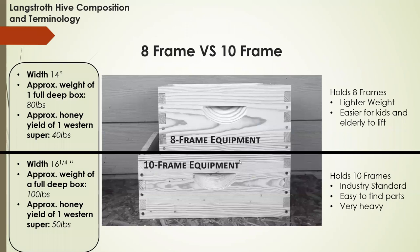Eight-frame versus ten-frame: it sounds complicated, but it's really simple. The only difference is you can fit eight frames into an eight-frame hive and ten frames into a ten-frame hive — the difference between the two hives is about two inches in width. They're the same height and depth. The weight is the biggest difference though: a full deep brood box in an eight-frame hive is typically around 80 pounds versus 100 pounds in a ten-frame. A lot of backyard beekeepers have gone to eight-frame equipment for exactly this reason.